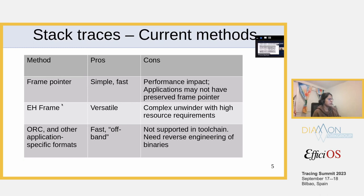Then comes the EH frame-based method — it's quite good in the sense that it's versatile, compact, and usable across languages and platforms. But the problem most commonly complained about is that the unwinder is becoming complex and has high resource requirements. In some cases, that's not feasible — we know of codebases that have deferred using EH frame-based unwinding for the longest time. The third class of solutions are application-specific formats.